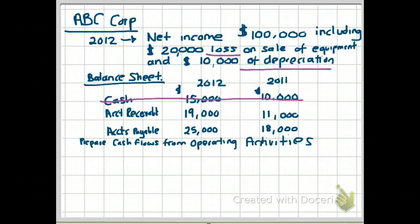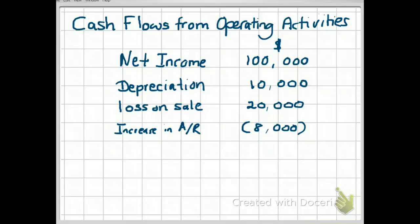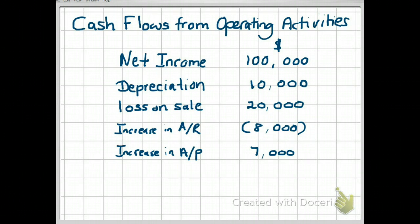Next, let's look at accounts payable, which is a current liability. Current liabilities have a direct relationship. In 2011, accounts payable were $18,000, and they went up to $25,000 in 2012 — an increase of $7,000. Because current liabilities increased by $7,000, that increases our cash flows from operating activities by the same amount, $7,000.